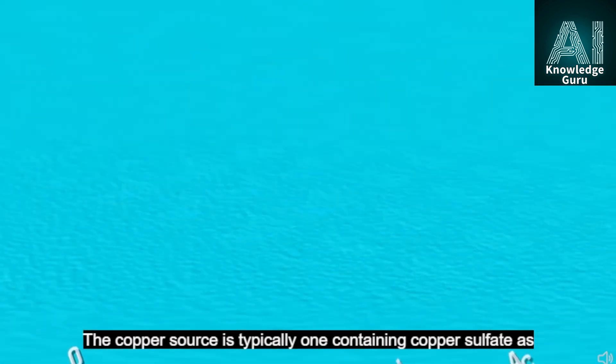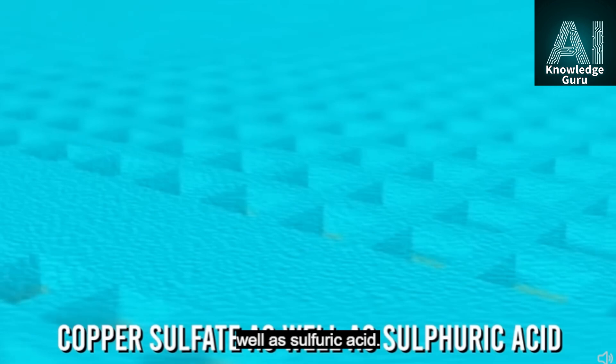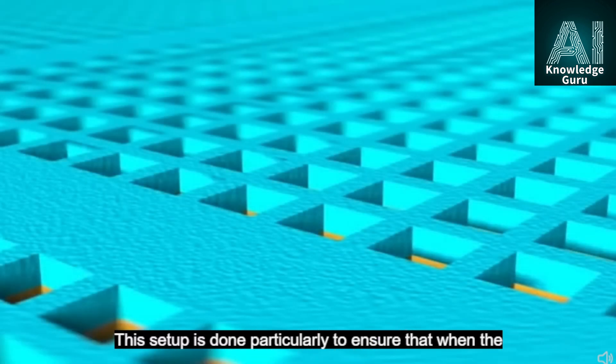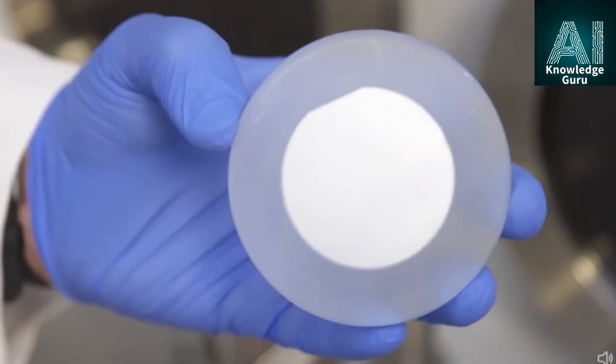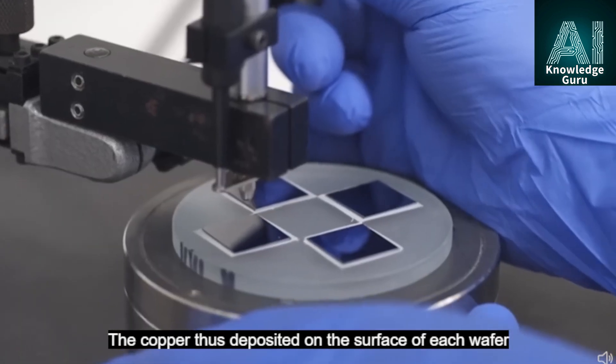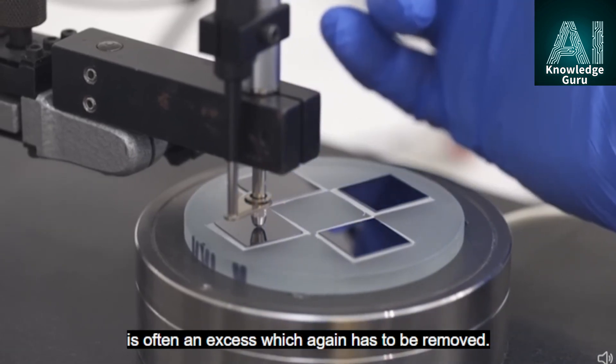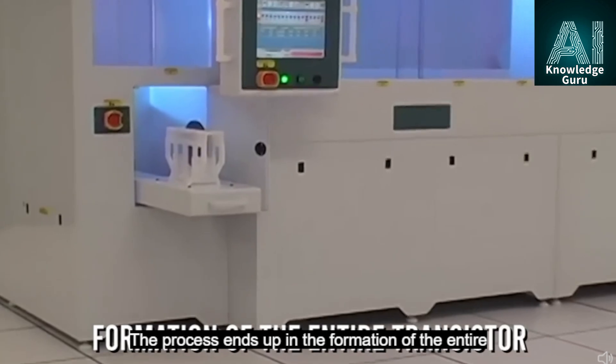The copper source is typically one containing copper sulfate as well as sulfuric acid. This setup is done particularly to ensure that when the current is passed, copper ions will deposit on the top of each wafer. The copper thus deposited on the surface of each wafer is often in excess, which again has to be removed.